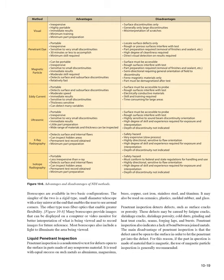Liquid penetrant inspection is a non-destructive test for defects open to the surface in parts made of any non-porous material. It is used on metals such as aluminum, magnesium, brass, copper, cast iron, stainless steel, and titanium, as well as ceramics, plastics, molded rubber, and glass. Penetrant inspection detects defects such as surface cracks, porosity, fatigue cracks, shrinkage cracks, cold shuts, grinding and heat treat cracks, seams, forging laps, and bursts. It also indicates a lack of bond between joined metals. The main disadvantage is that the defect must be open to the surface to allow penetrant entry. If the part is magnetic, magnetic particle inspection is generally recommended.